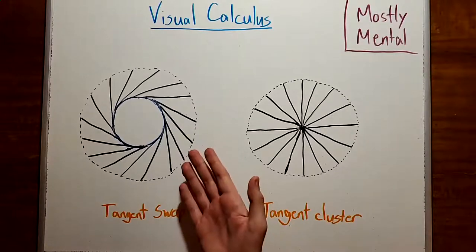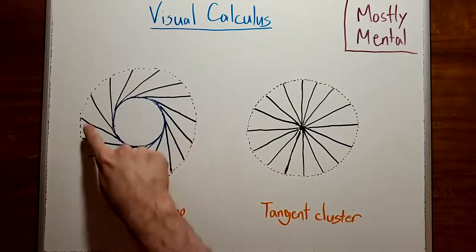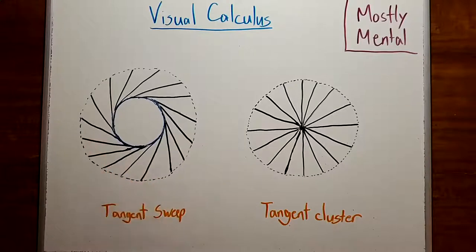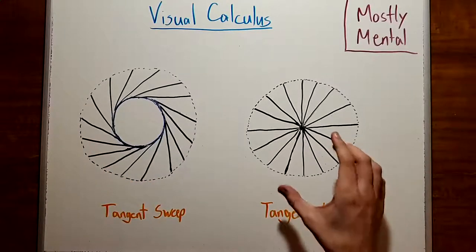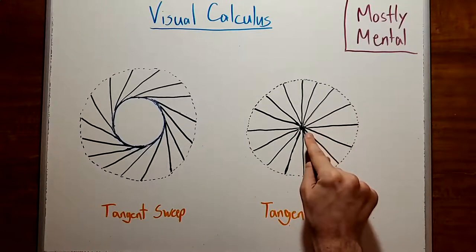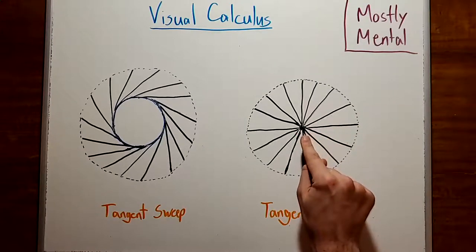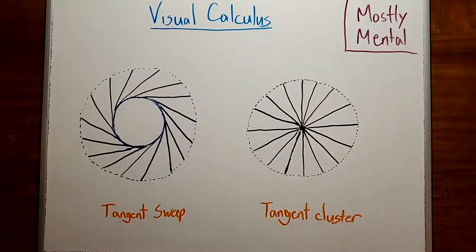The area of the tangent sweep, where we're sweeping a tangent along a curve, is the same as the area of the tangent cluster, where we're clustering all those tangent segments together at a point. This result, known as Mamikon's theorem, is a really powerful tool for finding areas.